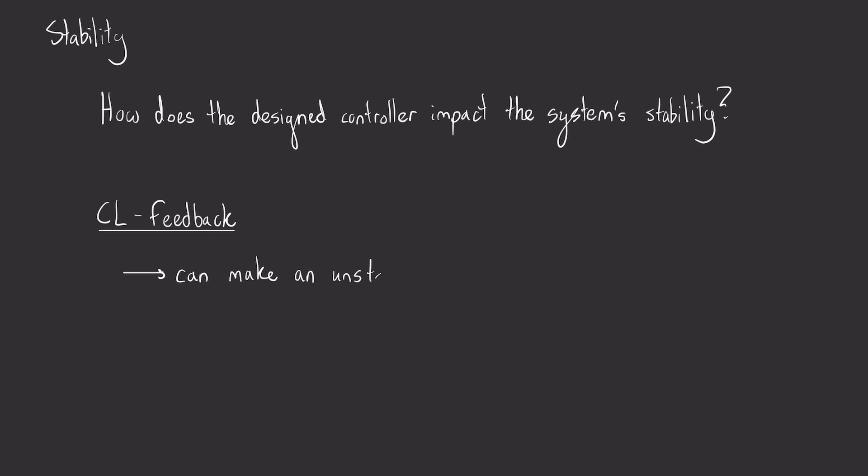Classical control and control systems more broadly have a major emphasis on the conversation of stability. Namely, how does the design controller impact the system's stability? By adding in a controller and closed loop feedback into your system, you inherently change the system's dynamics. And this can make an unstable system stable, or it could do the opposite.